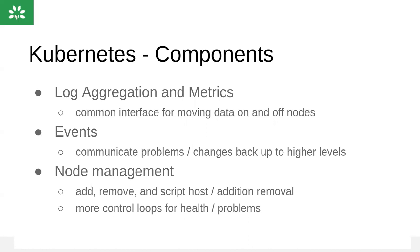When it comes to events, we can communicate or take a backup. For high availability, whenever anything fails or an event happens, we can retrieve the data using these backups. These kinds of features are available in OpenShift.